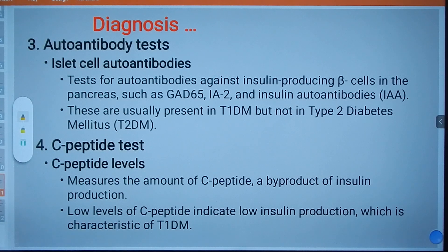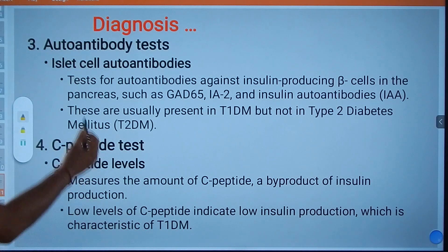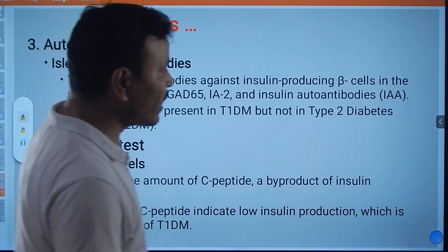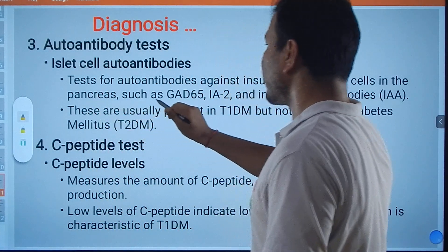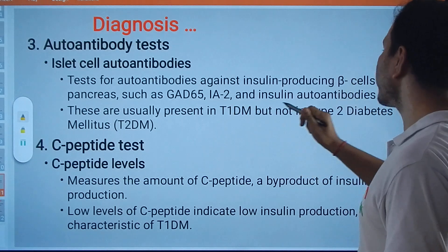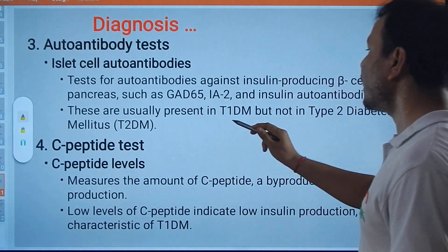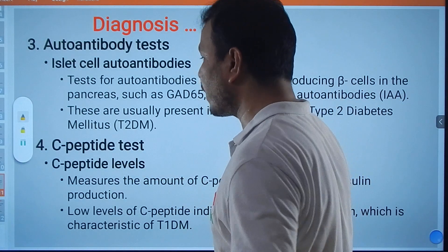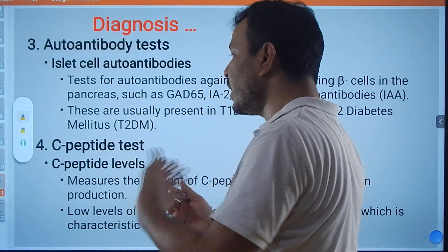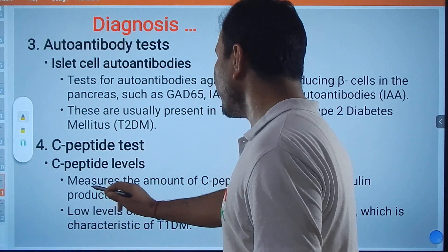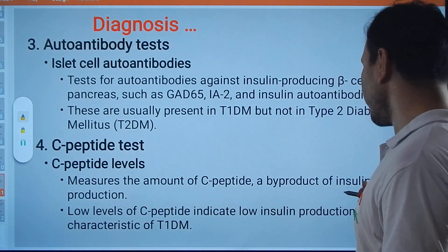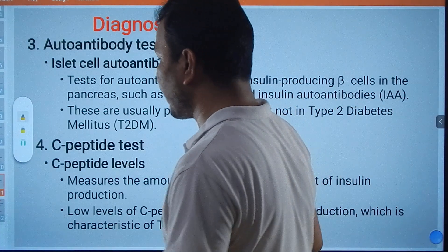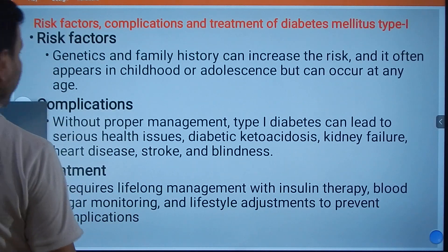Diagnosis can also be done through autoantibody testing. Islet cell autoantibodies can be tested against insulin-producing beta cells in the pancreas, such as GAD65, IA-2, and insulin autoantibodies. These are usually present in Type 1 but not in Type 2 Diabetes Mellitus. A C-peptide test can also be performed, which measures the amount of C-peptide — a by-product of insulin production. Low C-peptide levels indicate low insulin production, characteristic of Type 1 Diabetes Mellitus.